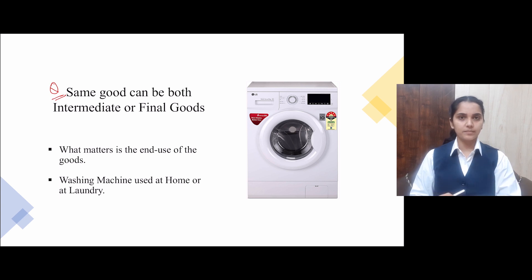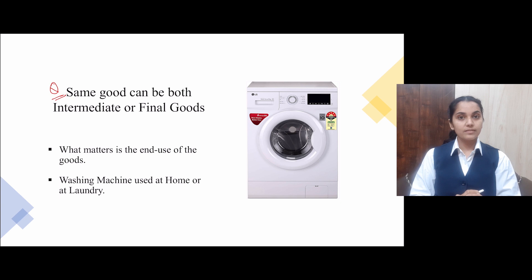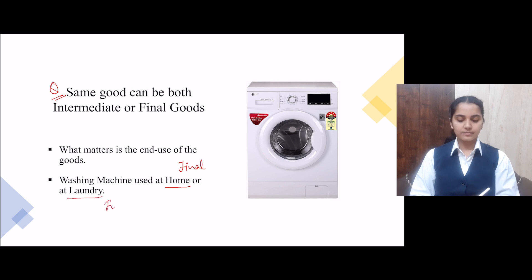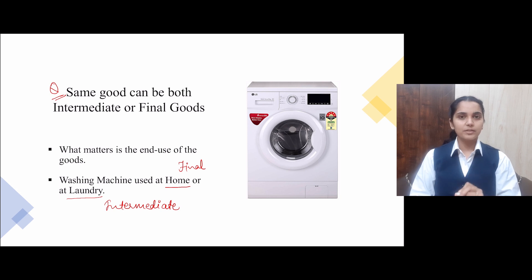I have given you an example of a washing machine. What matters is the end use of the good. A washing machine can be used at home or at a laundry. If you are using it at home for personal purposes, that will be a final good. But if it is being used at a laundry specifically to earn money — to provide services — then it will be intermediate, because the supplier of the service is using that good, not the final consumer.